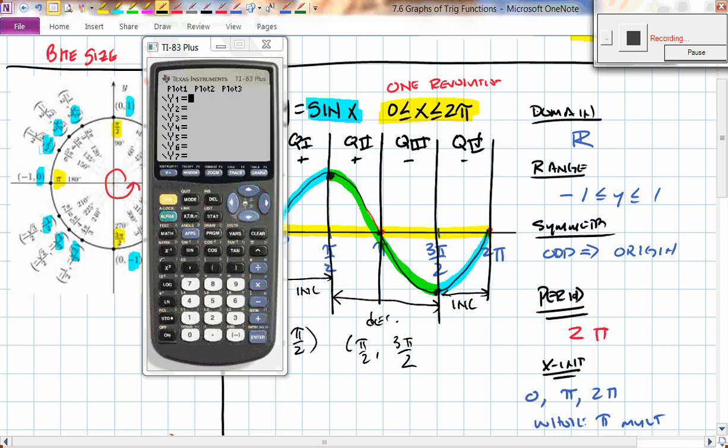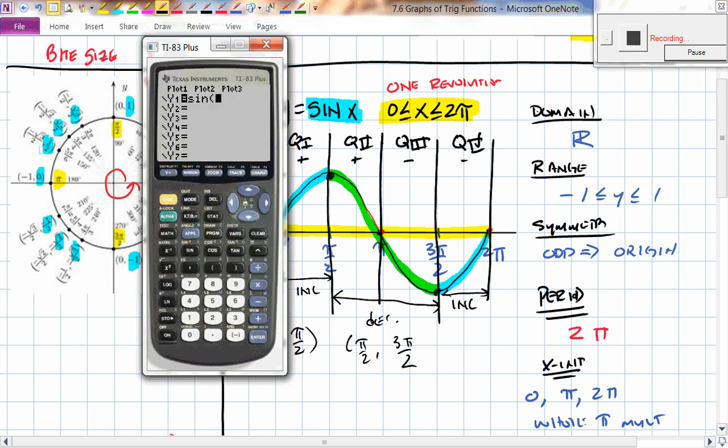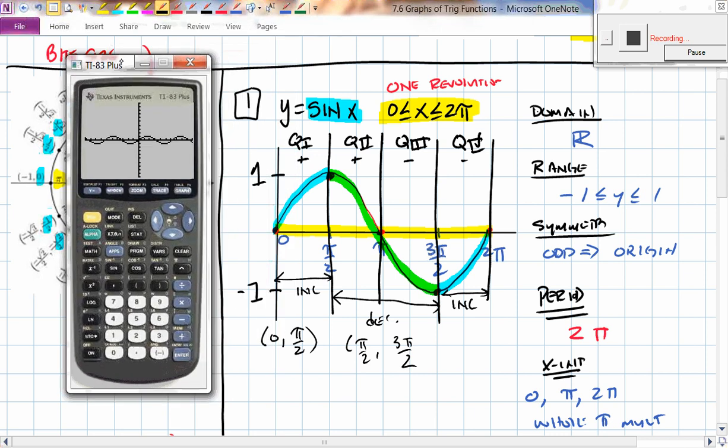So, that means that the spaces in between, this stuff that I've highlighted in green, that must be the decreasing interval from there to there. That's my decreasing interval from π/2 all the way up to 3π/2. And in order to graph trig functions on the calculator, your calculator has to be in radian mode. So, take a quick look and make sure your calculator is in radian mode.